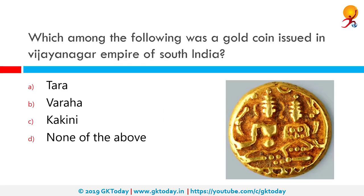Which among the following was a gold coin issued in the Vijayanagara Empire of South India? The correct answer is Varaha. Varaha was a gold coin, whereas Tara was a silver coin and Kakini was a copper coin.